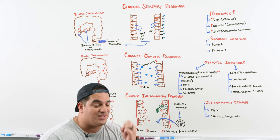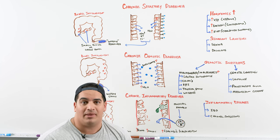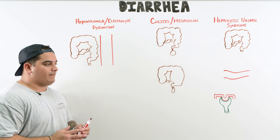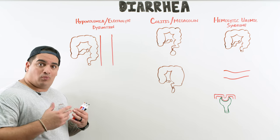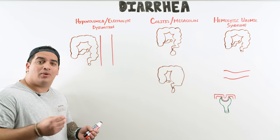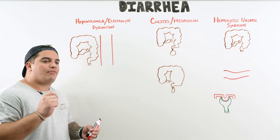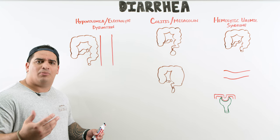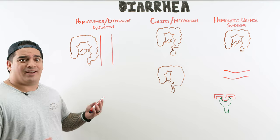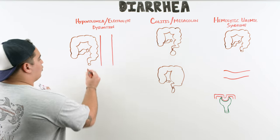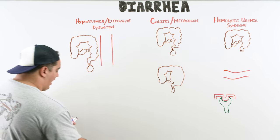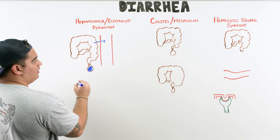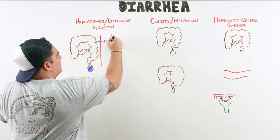Now let's talk about complications of acute diarrhea. When a patient comes in with intense watery or bloody mucoid diarrhea, watch for these key complications. First is hypovolemia — especially with non-inflammatory diarrhea, patients are having high-volume, very voluminous watery stools and losing large amounts of fluid from the GI tract.